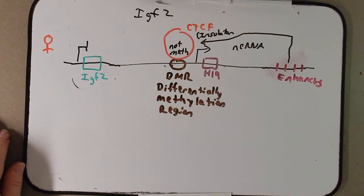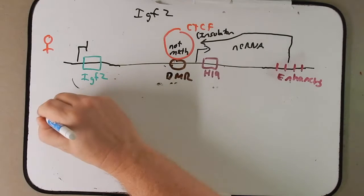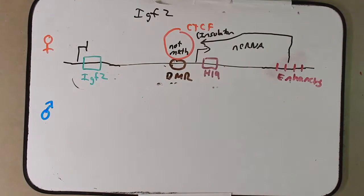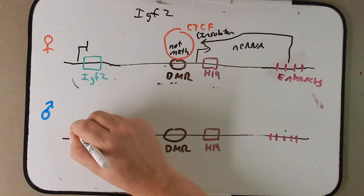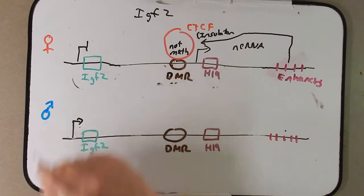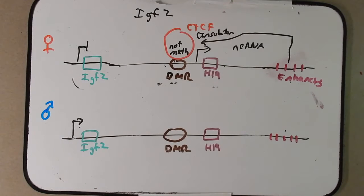Now let's consider this as the paternal source of IGF2, and I'll draw that down here. So it's going to have the exact same region. So let's go ahead and draw those in here real quick. Okay, so we have our paternal source drawn here and let's remember that the IGF2 from the paternal source is expressed. How does it do that?